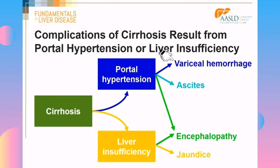Varices and variceal hemorrhage are a direct consequence of portal hypertension. Ascites is also the result mostly of portal hypertension in the hyperdynamic circulatory state. Encephalopathy has a dual pathophysiology: portal systemic shunting resulting from portal hypertension, and liver insufficiency that will decrease the metabolism of ammonia. Jaundice is just a marker that the liver is failing, and is mostly due to liver insufficiency.